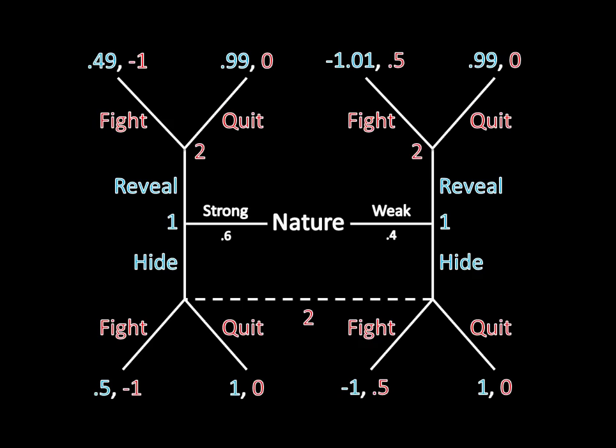We're going to be using the same game as what we covered last time. This is a war game between Player 1 and Player 2, where Player 1 has some private information about whether he's a strong type or a weak type. He can then choose whether to reveal or hide, and Player 2 chooses whether to fight or quit. Player 2 wants to fight against the weak type and quit against the strong type. Player 1 just wants to have Player 2 quit, whether he's weak or strong, and will face a small cost if he reveals his information.